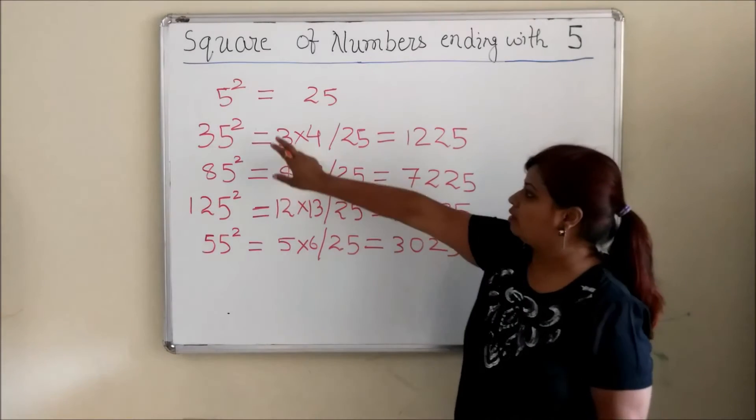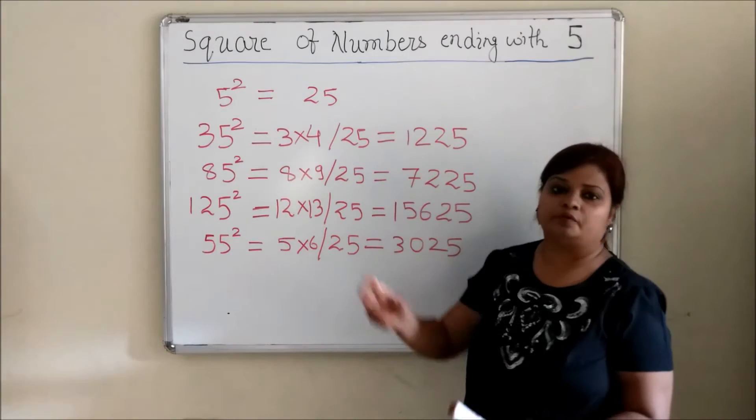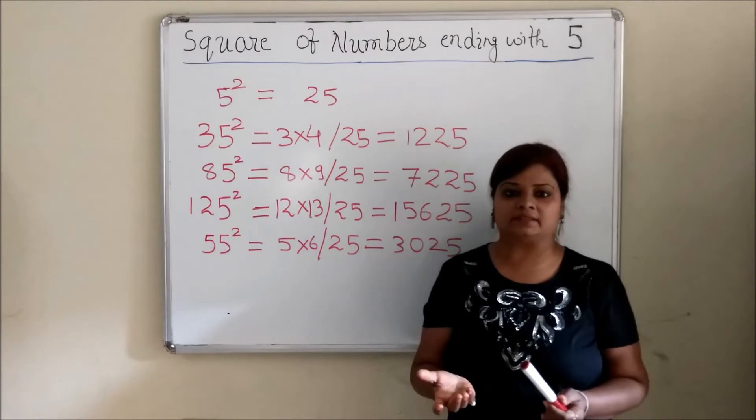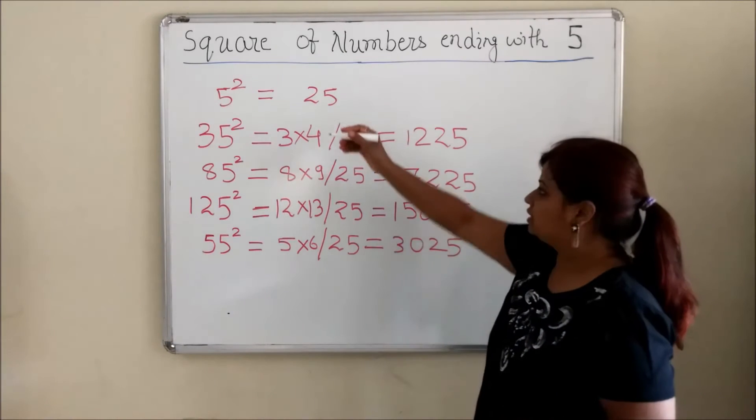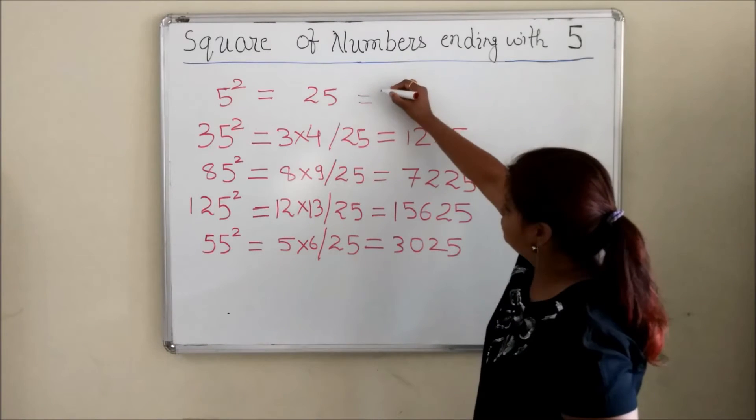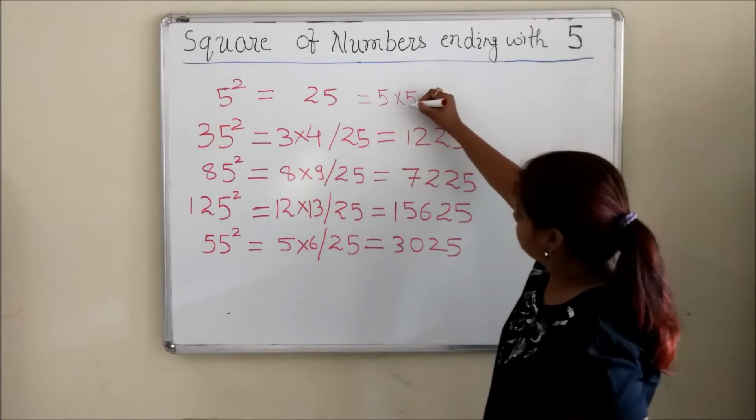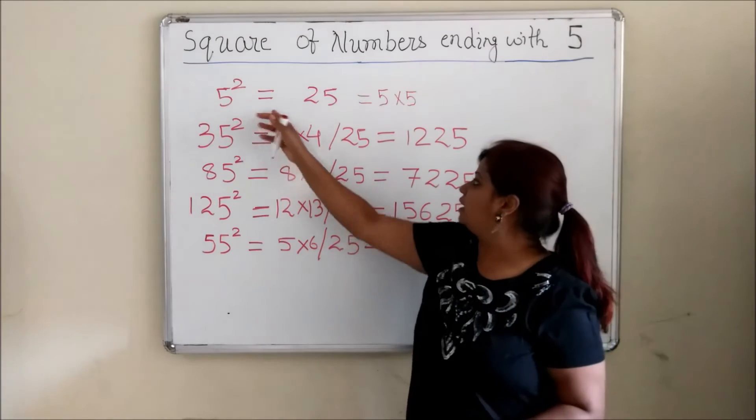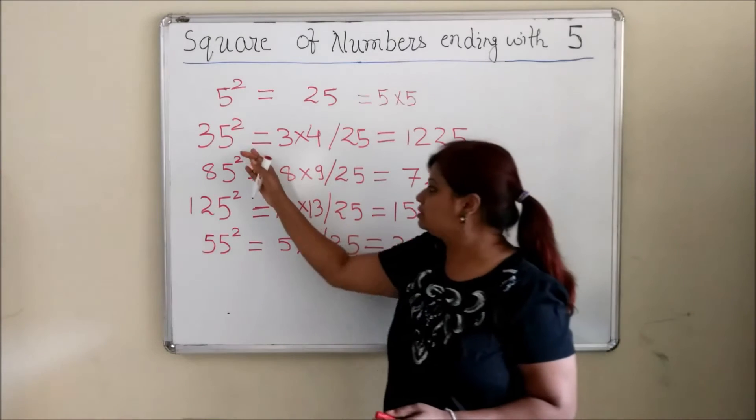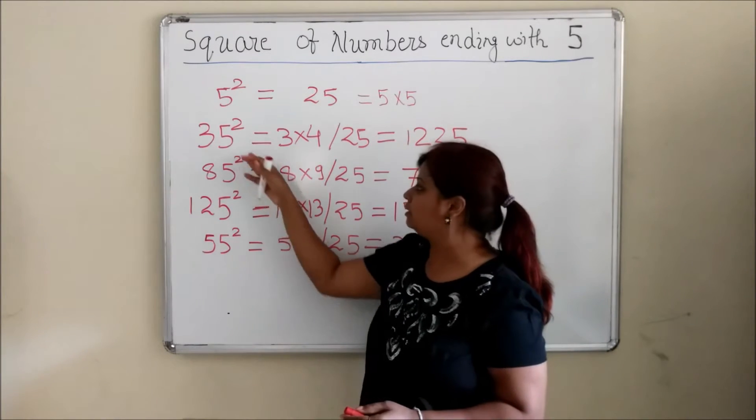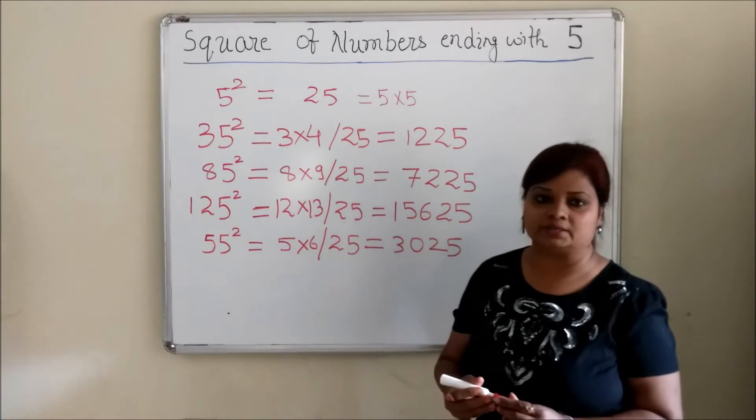All of you know that 5 square is 25. Now what is a square? You are multiplying the number twice. So basically 5 square actually means 5 into 5. So 5 square is 25. Now what happens when you have numbers ending with 5 and you need to find a square?